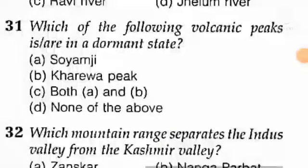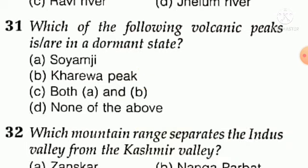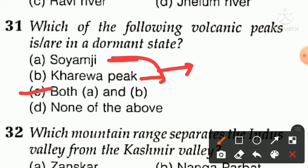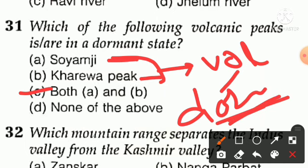Question number thirty-one: which of the following volcanic peaks is in a dormant state? Option A — Soymg, option B — Kharewa Peak, option C — both A and B, option D — none of the above. The right answer is option C — both Soymg and Kharewa Peak are dormant volcanic peaks. They are not active volcanic peaks — they are dormant.